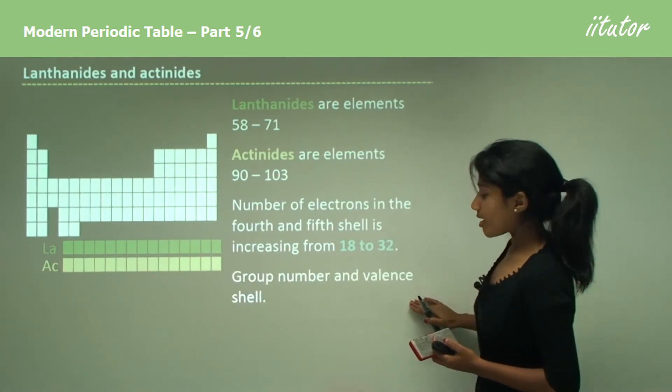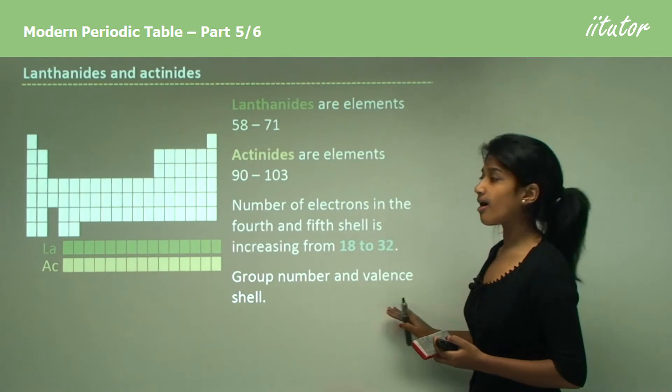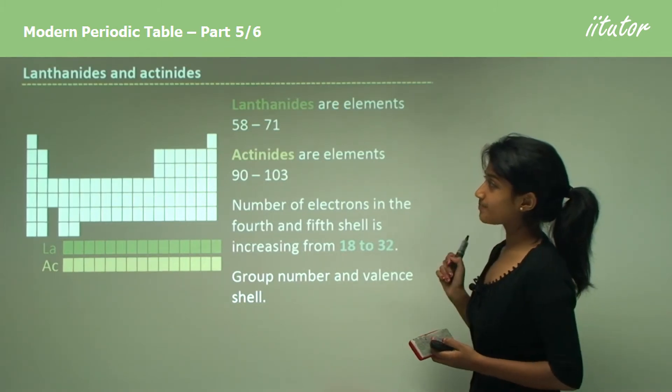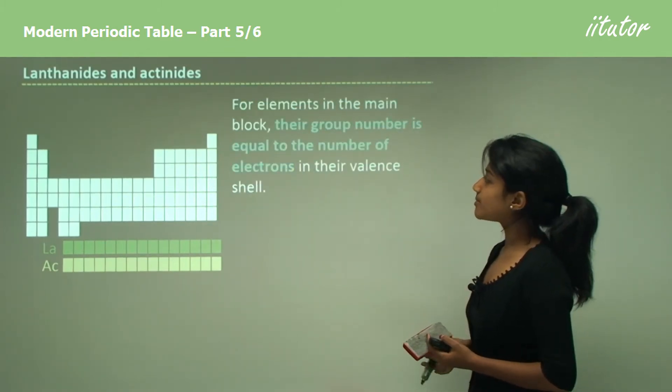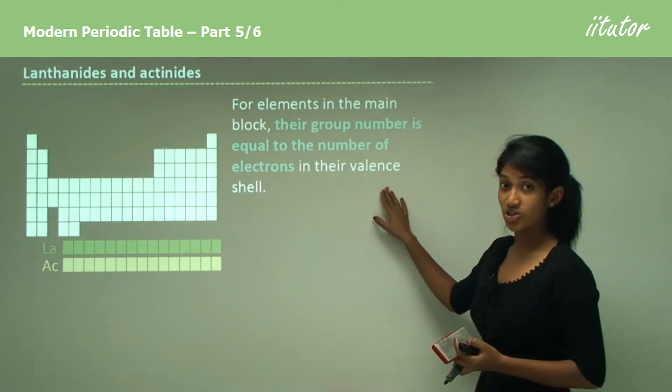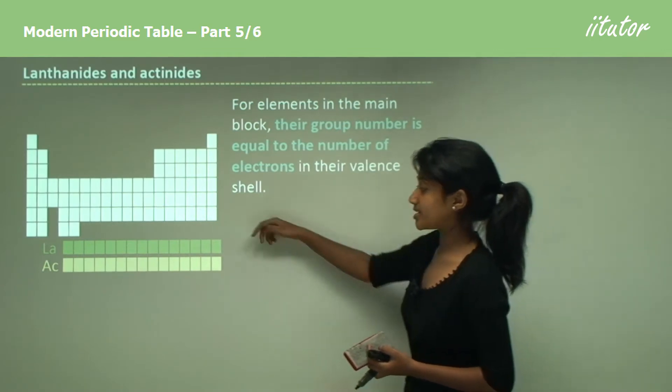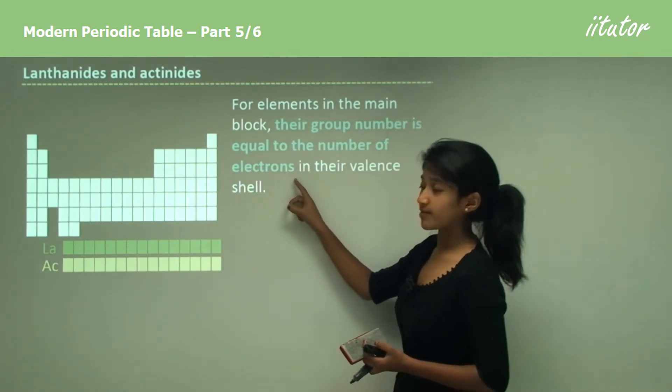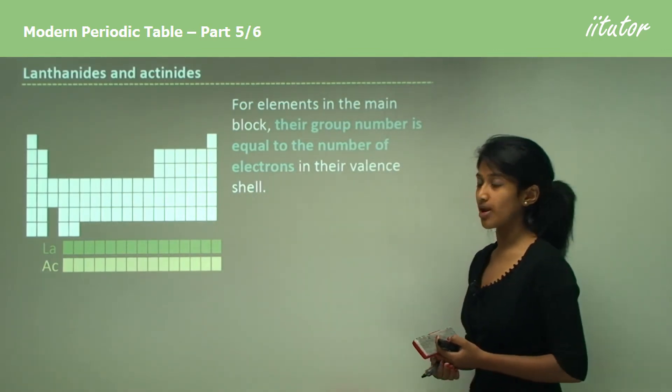And group number and valence shell. So these are how they are defined. For elements in the main block, their group number is equal to the number of electrons in the valence shell. So that means how many electrons in the valence shell would define their group number.